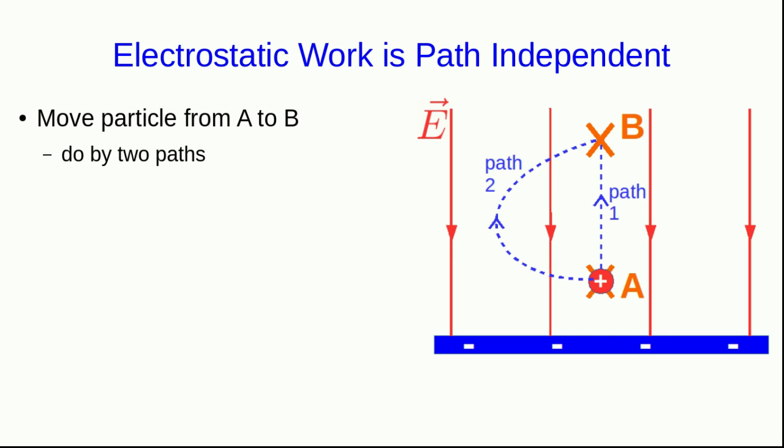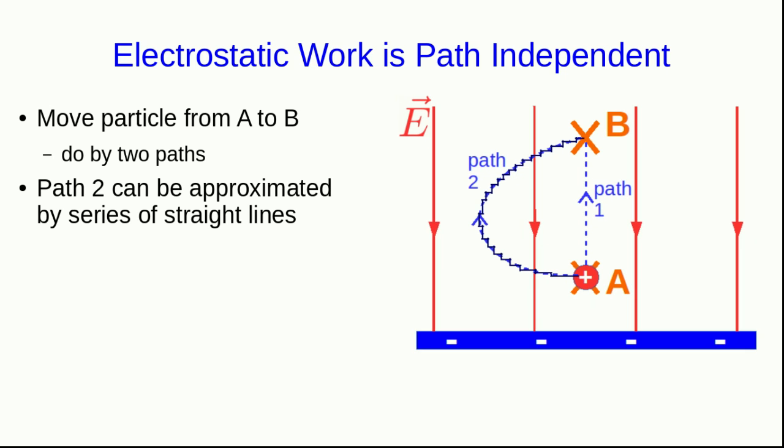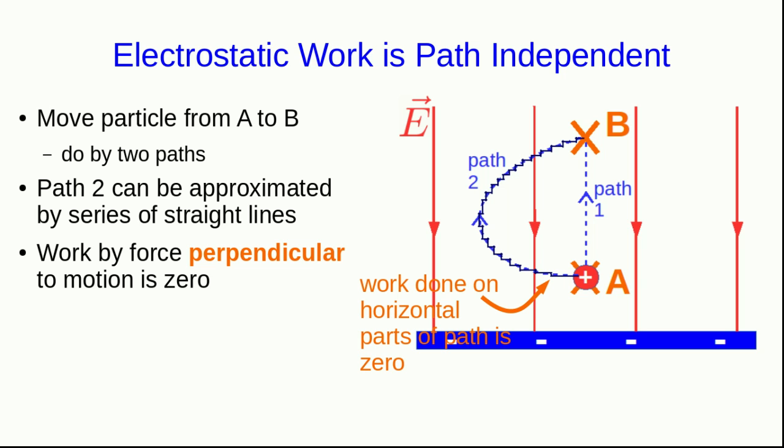What about path 2? Well, we can repeat an argument that I made back in Phys 1104. I can break path 2 up into a series of straight lines to at least approximate it. Now, we know that the work done by a force is zero if the force is perpendicular to the motion, and so the work done along all these horizontal parts of the path is zero.